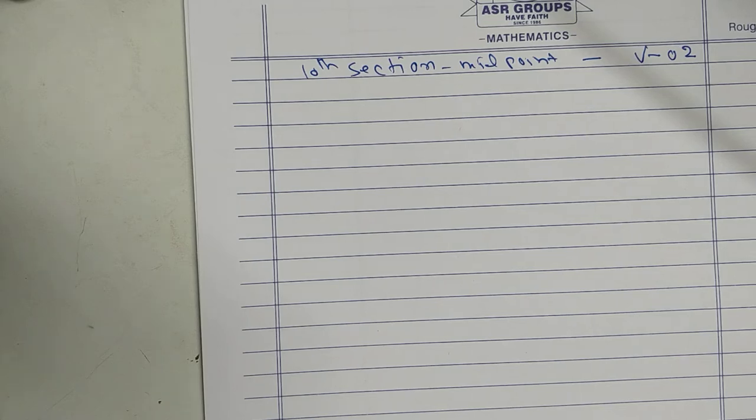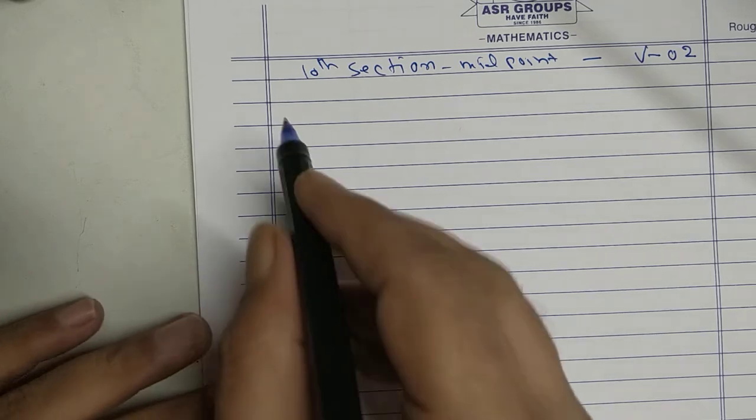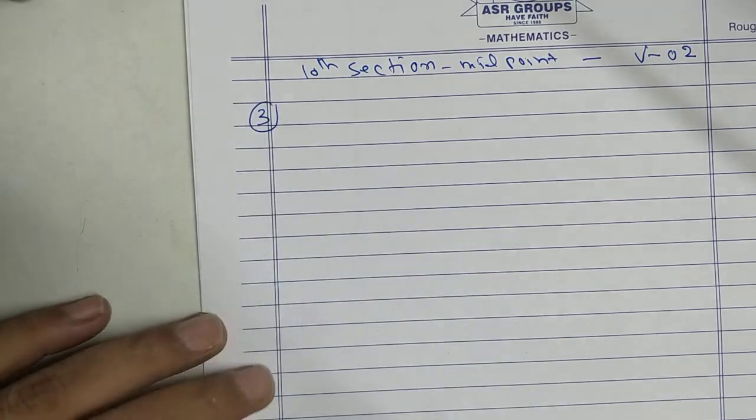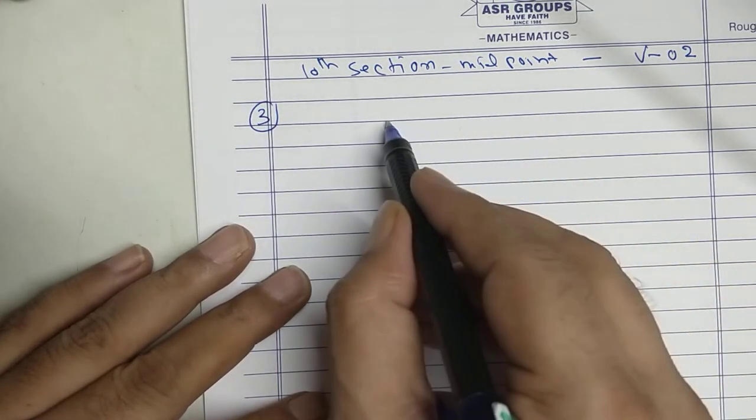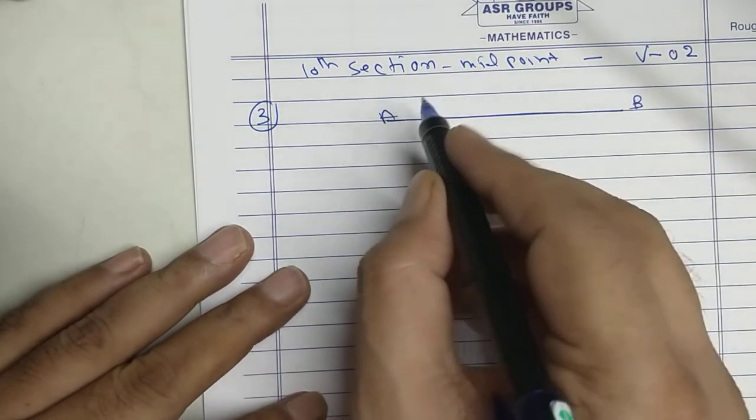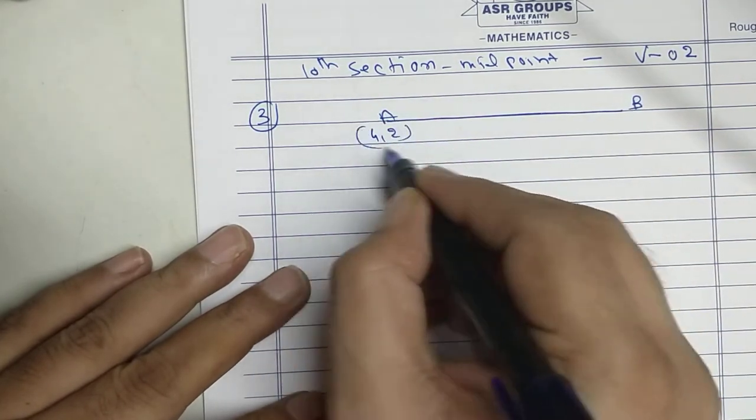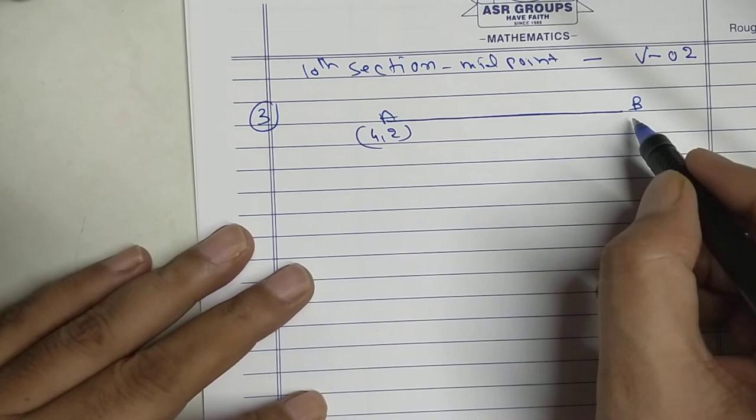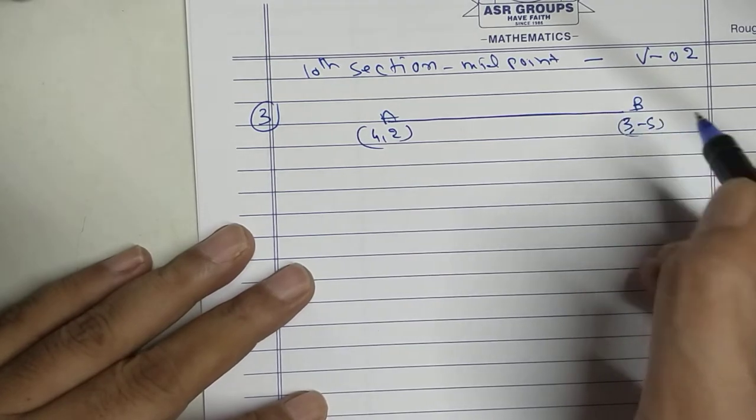Section midpoint centroid. Sum number 3. A and B. A is given 4 and 2. B is given 3m minus 5.